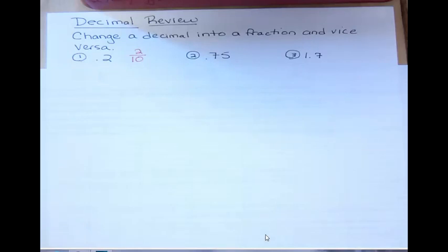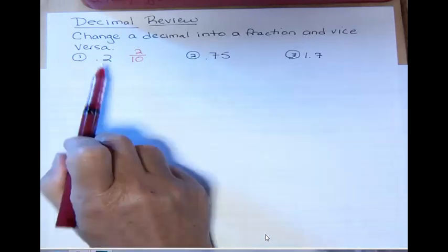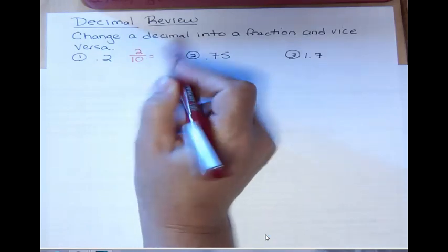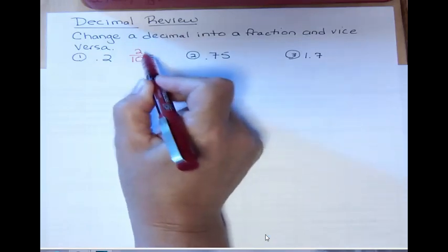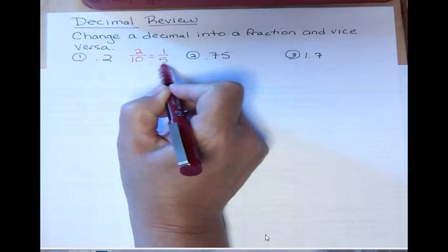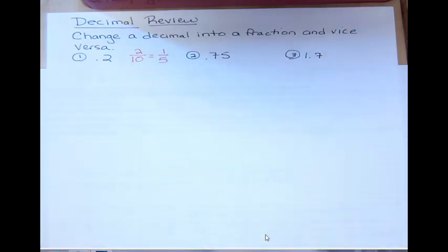So one decimal place, one zero. And then of course you always want to reduce to lowest terms. So 2 tenths, if you divide both the top and the bottom by 2, you would get 1 fifth. So 2 tenths is 1 fifth as a fraction in lowest terms.